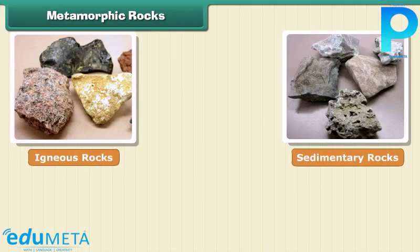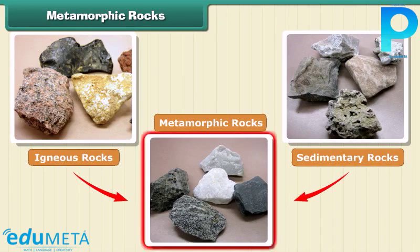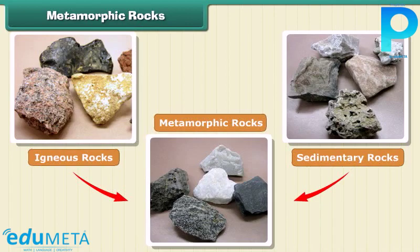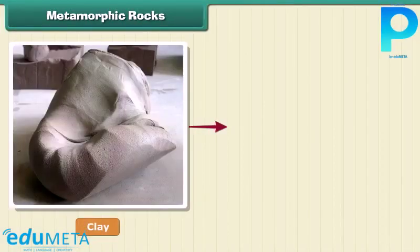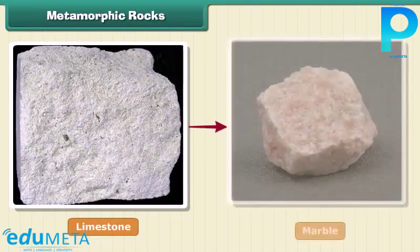The third type of rock is made out of the first two types. These are metamorphic, or changed, rocks. Igneous and sedimentary rocks can change into metamorphic rocks under great heat and pressure. For example, clay changes into slate and limestone into marble.